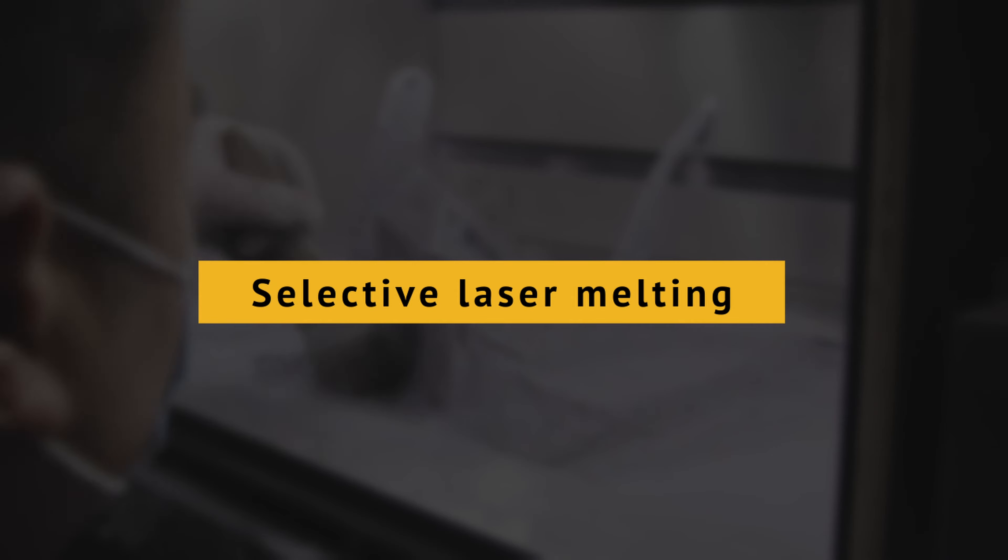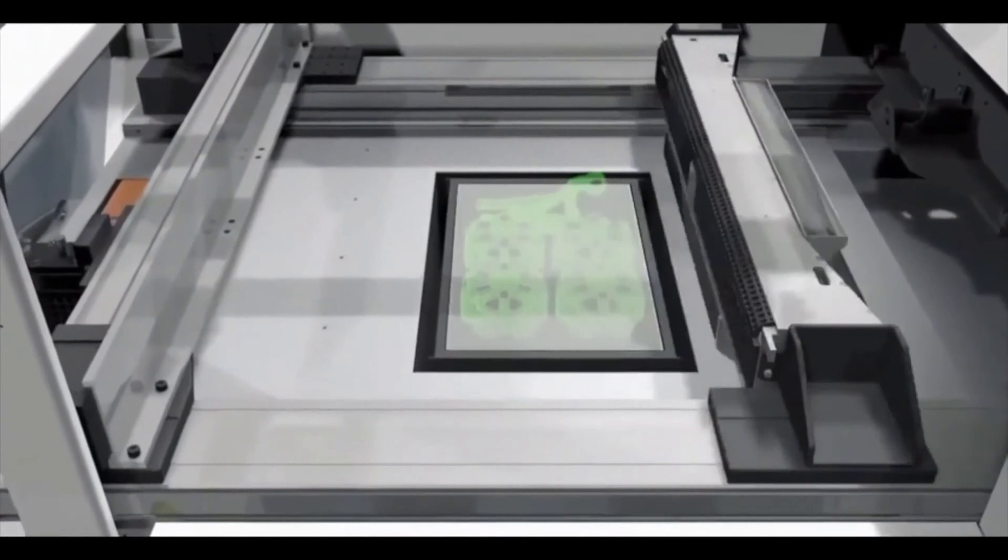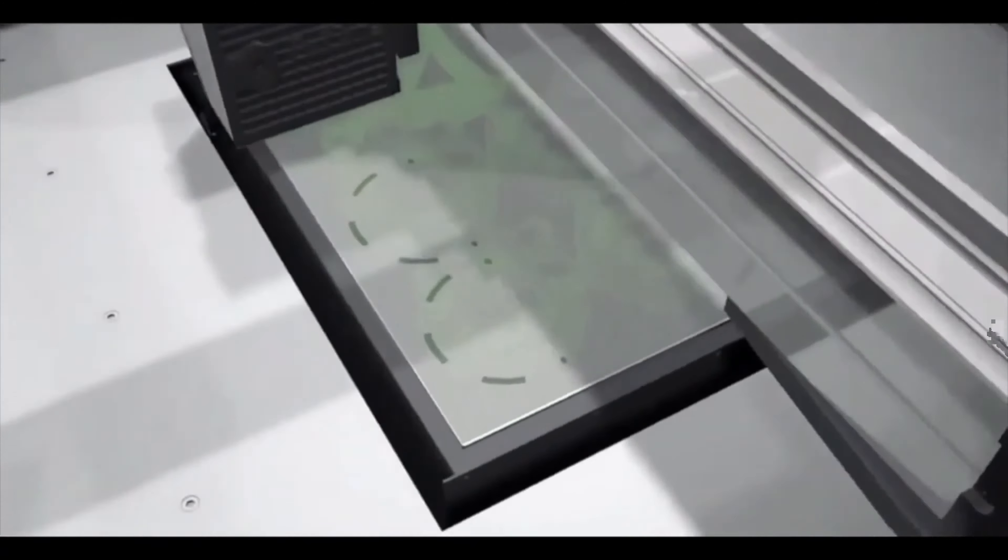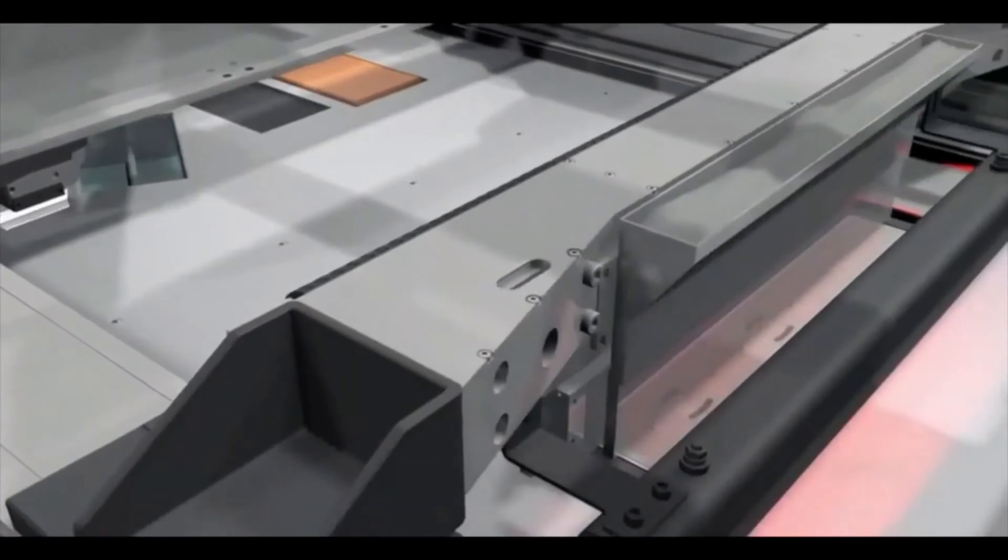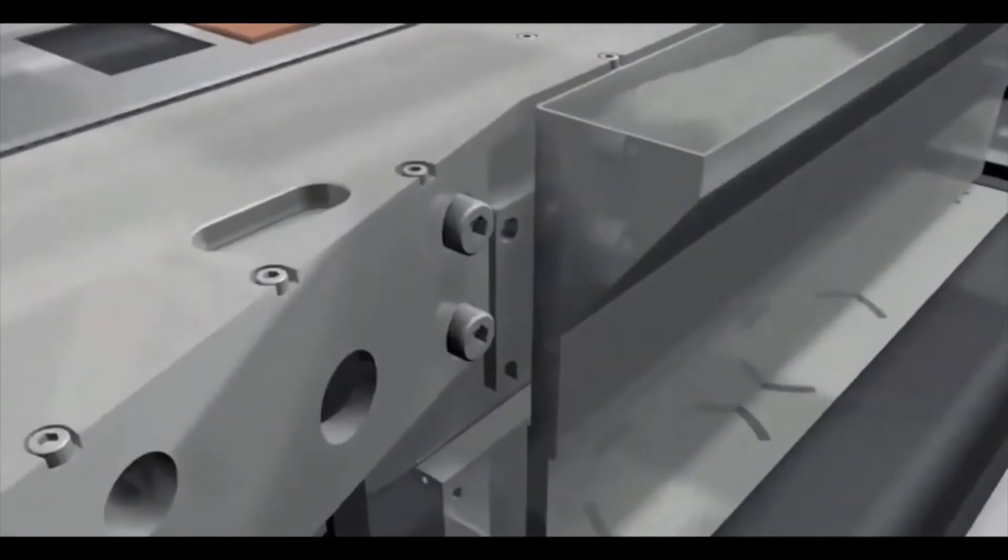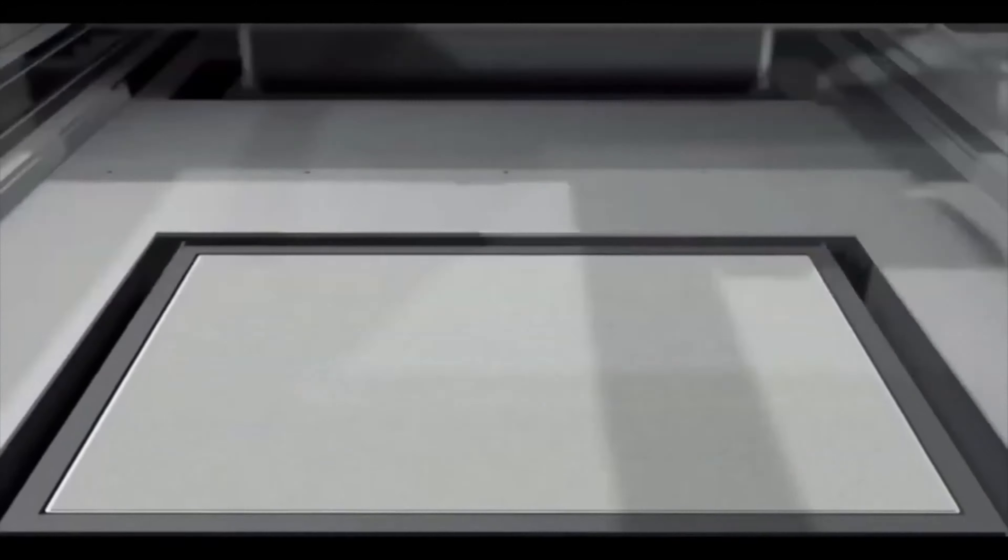Selective laser melting is a process in which a high-powered laser fully melts each layer of metal powder, rather than just sintering it. Selective laser melting produces printed objects that are extremely dense and strong. These methods require added support to compensate for the high residual stress and to limit the occurrence of distortion.